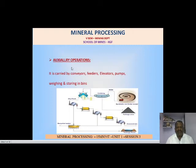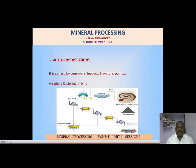The last operation is auxiliary operations, carried out using conveyors, feeders, elevators, pumps, weighing machines, and storing bins, which support the overall process. For example, run-of-mine material is carried by tippers and dumpers to the crusher; from the crusher, crushed material is conveyed by feeders and conveyors; elevators lift the material further; and auxiliary equipment like pumps, weighers, and storing bins are also used in the process.